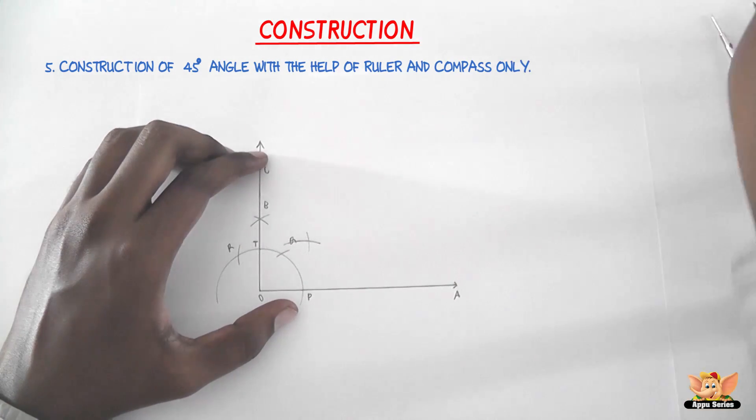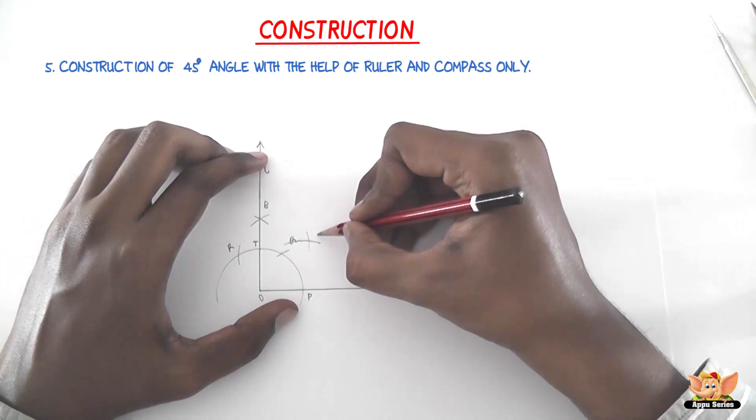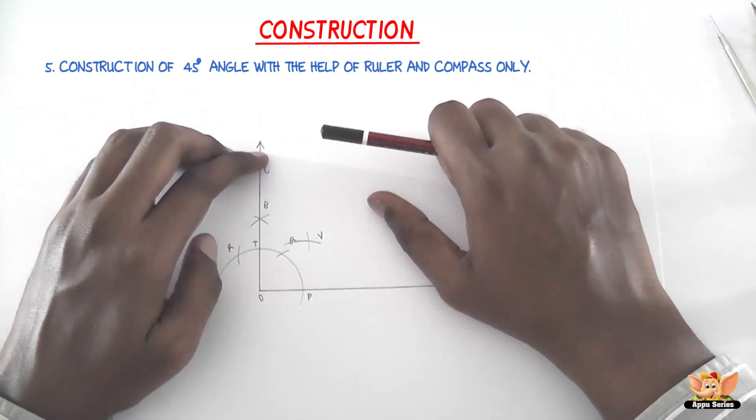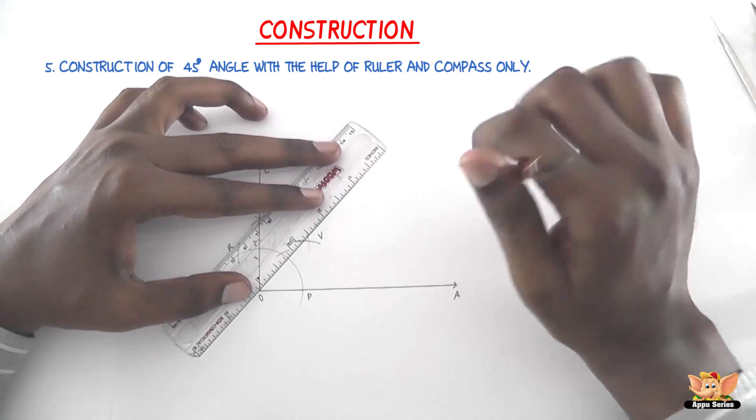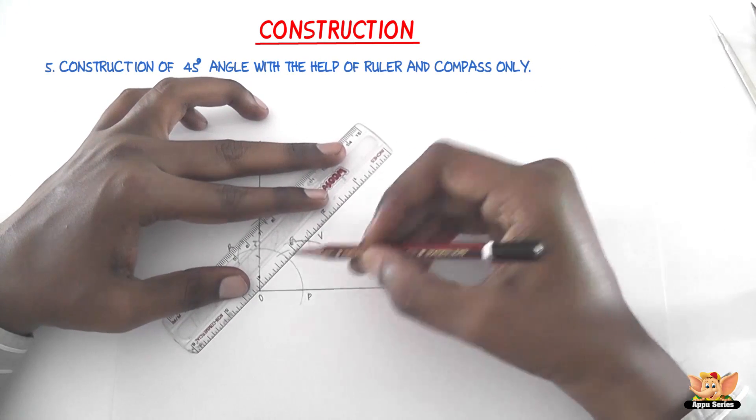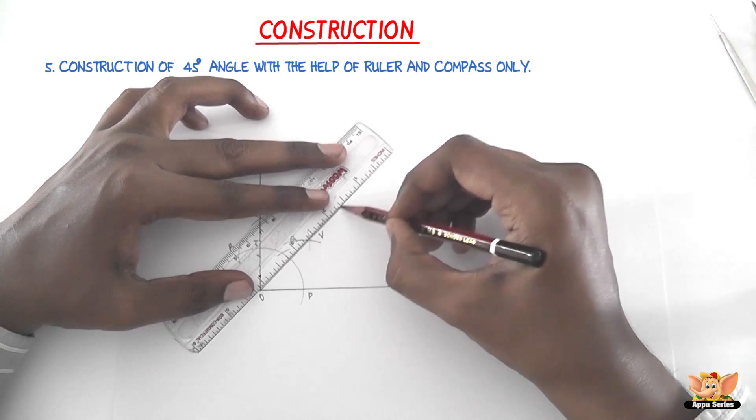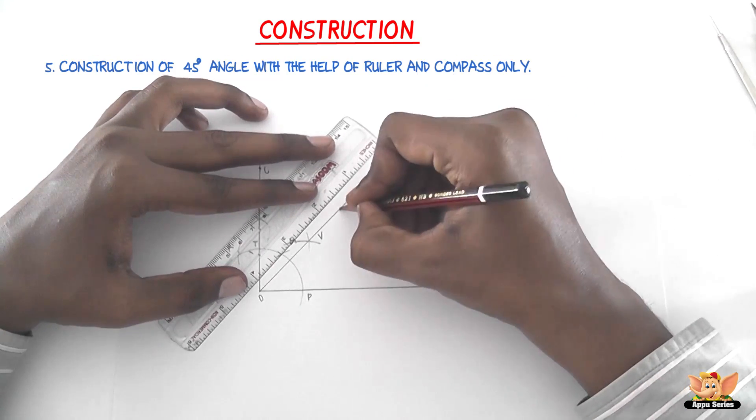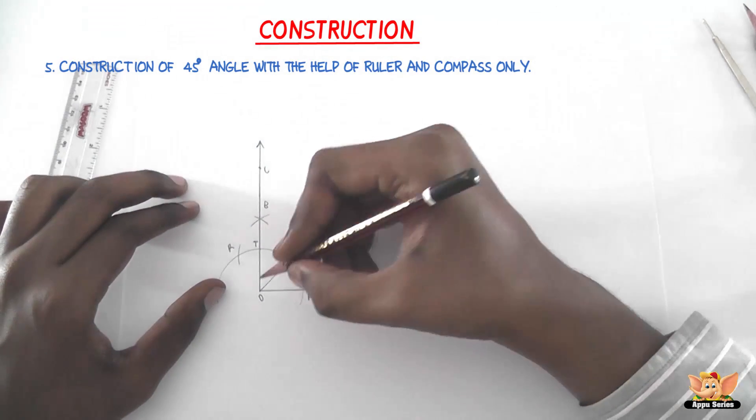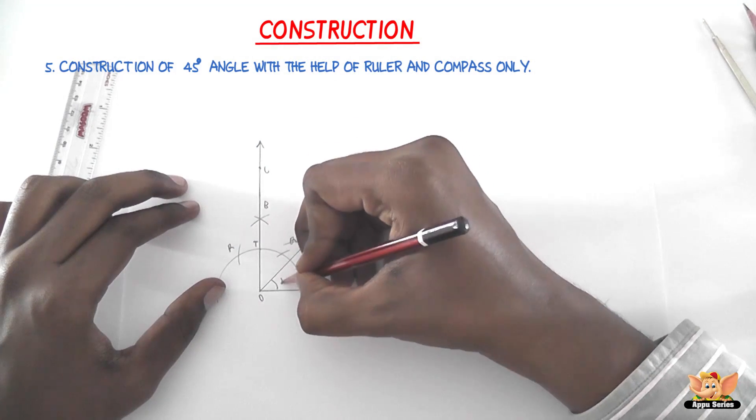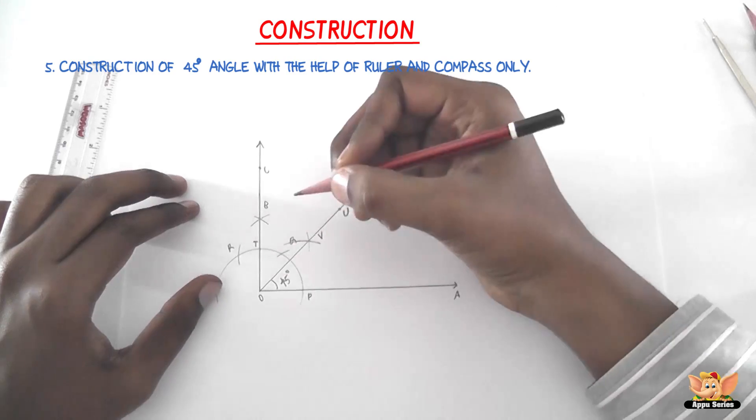Now name this as V. Now join OV and produce it to meet at U. So the angle AOU so obtained is the angle of 45 degrees which is a bisection of 90 degrees.